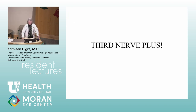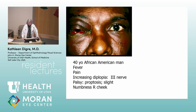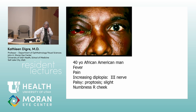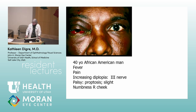This is a section I call third nerve plus. An African-American man at the VA hospital had fever, pain, increasing diplopia, a third nerve palsy, proptosis, and numbness of his right cheek. When you get numbness, the lesson is: when you see a third nerve palsy, you've got to look for the fifth nerve. Cavernous sinus lesions are going to give you trouble with the fifth nerve. He had numbness on the right cheek — that's division two of five.